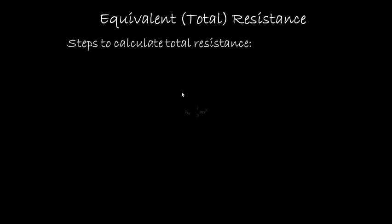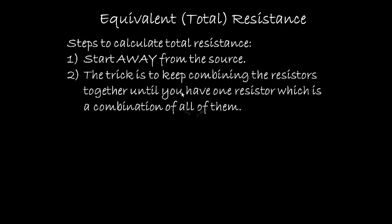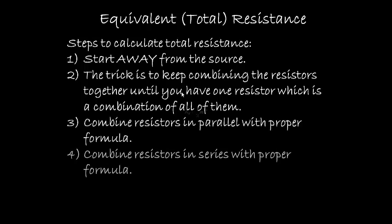Before we actually do an example, I'm going to go through some of the steps that we're going to use. An important step is that you're going to start away from the source in your calculations. And then the trick is to keep combining the resistors together until you have one resistor, which is a combination of all of them. You're going to use the proper formulas. If they're in parallel, you use that formula. If they're in series, you'll use the series formula.